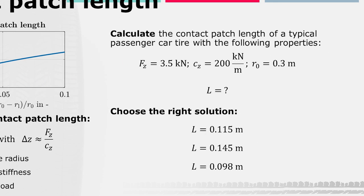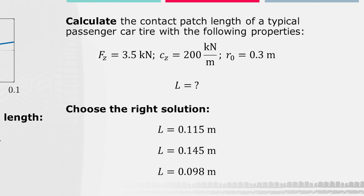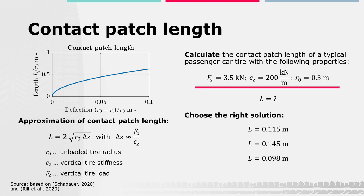Now, calculate the contact patch length of a typical passenger car tire by means of this approximation with the following parameters. The vertical force is 3.5 kN, the vertical stiffness is 200 kN per meter and the unloaded tire radius is 0.3 meter. Choose the right solution.